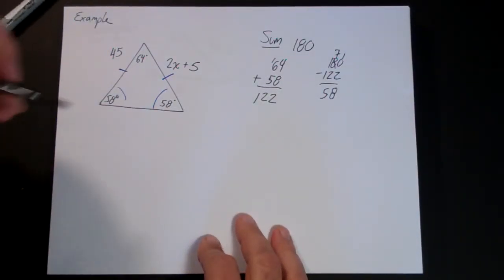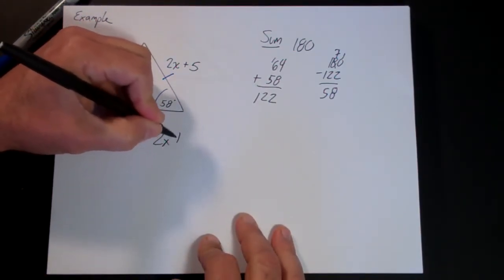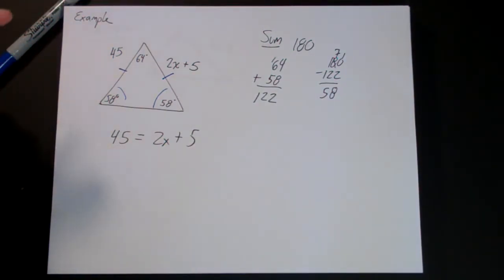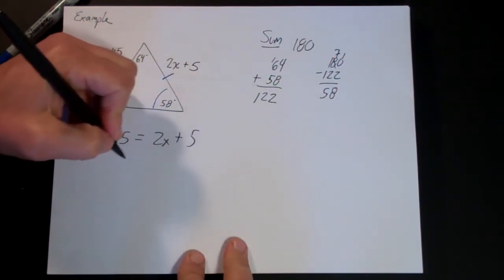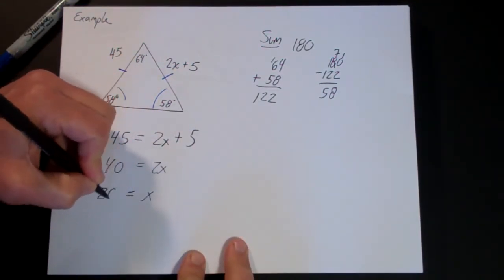So then we know that 45 has to equal 2x plus 5 because the definition of congruent sides are equal in length. So now we simply subtract 5 from both sides and divide by 2, so we get x is 20.